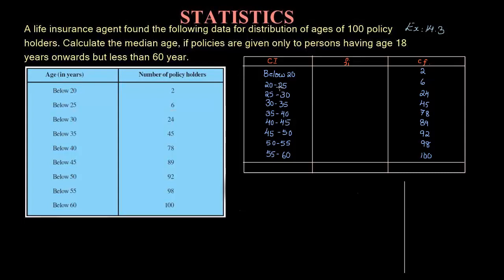So 25 is now the upper limit of the first class interval, and it becomes the lower limit of the next class interval. The upper limit of the third class interval you need to find from the question, that is 30. In the same way, you need to find all the class intervals for all values given in the table.